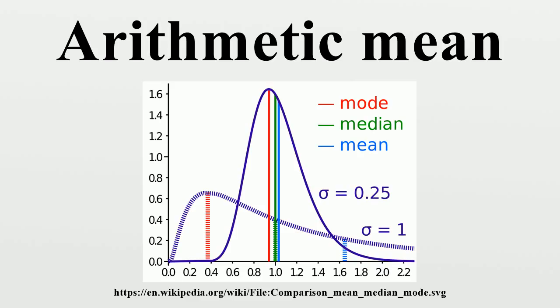The arithmetic mean may be contrasted with the median. The median is defined such that half the values are larger than, and half are smaller than, the median. If elements in the sample data increase arithmetically when placed in some order, then the median and arithmetic average are equal.